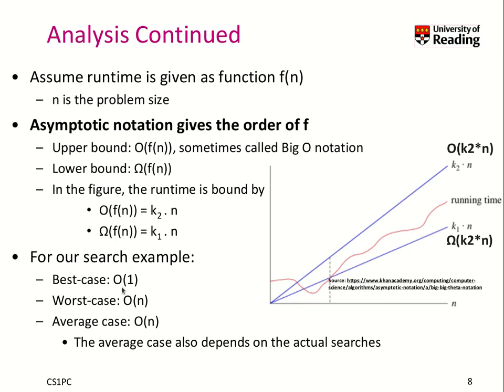For our search example, if you remember, our best case was basically one operation, so we have O of 1 as best case. As a worst case, this one is bound as O of n. And in average, if you do the analysis, you will find out that it is, in fact, as well O of n. But how wide it is, we will have a look in a couple of minutes.